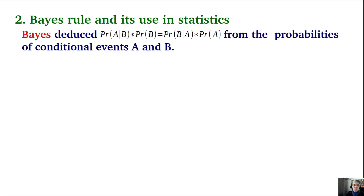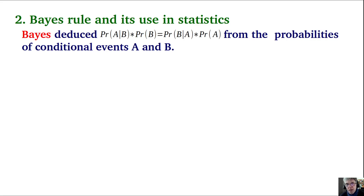Bayes, in his posthumous paper, stated the equation shown on screen: the probability of A given B times the probability of B equals the probability of B given A times the probability of A. This is a non-controversial statement obtained simply from conditional events A and B.